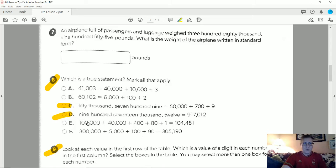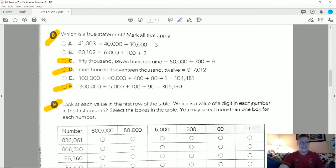Letter D, 917,012, and I have 917,012, so that one's going to work. 100,000 plus 40,000 plus 400 plus 80 plus 1, this doesn't match up. The last option, 300,000 plus 5,000 plus 100 plus 90 should give us 305,190, that does match, so letter C, D, and F for that.